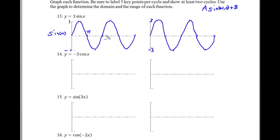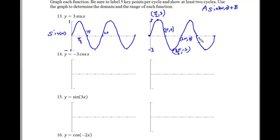For 3sin(x), the key points are: (0,0), (π/2, 3), (π, 0), (3π/2, -3), (2π, 0) completing the first cycle. The second cycle continues with x-intercepts at 3π and 4π, and peaks at (5π/2, 3) and troughs at (7π/2, -3), ending at (4π, 0).